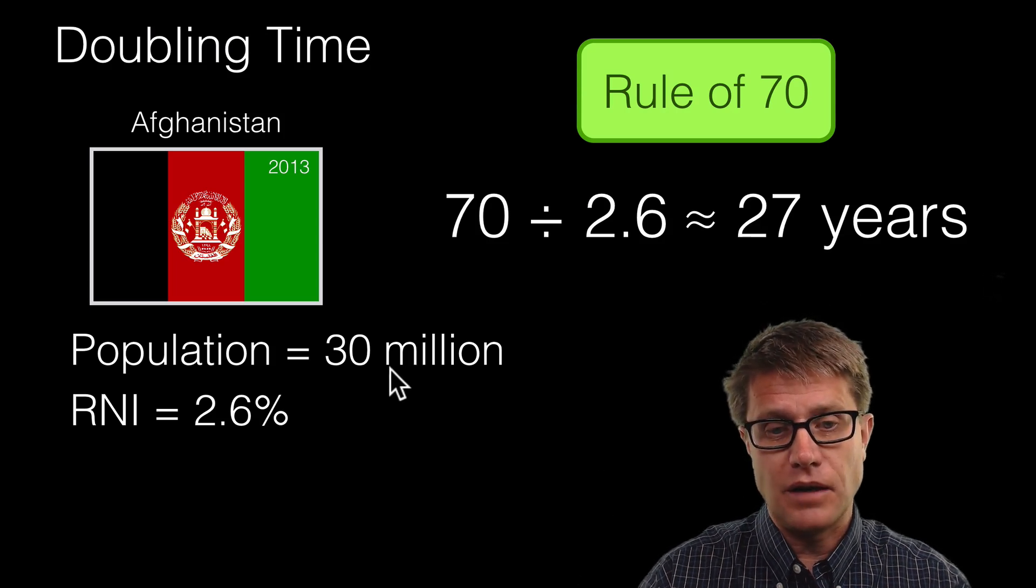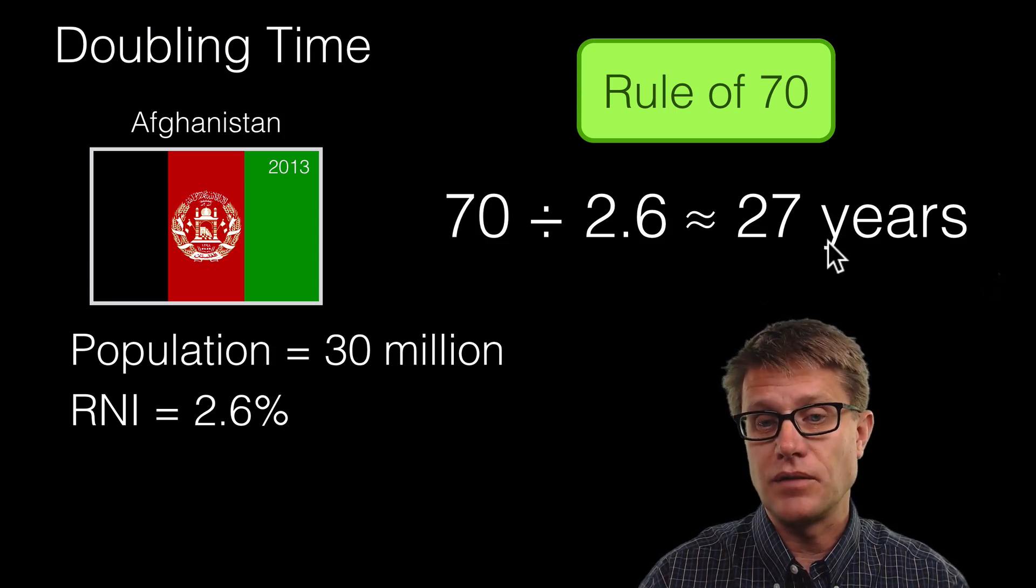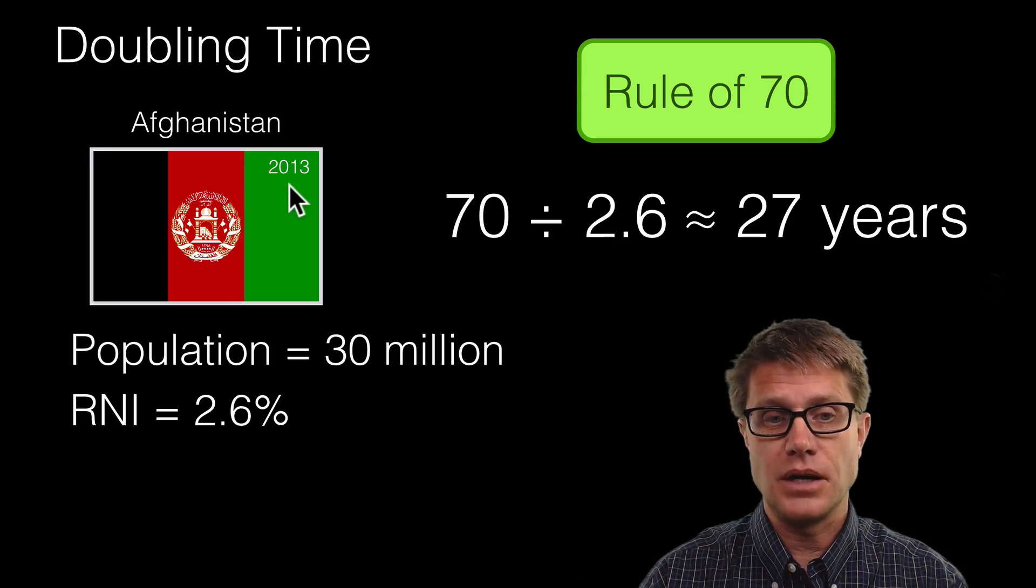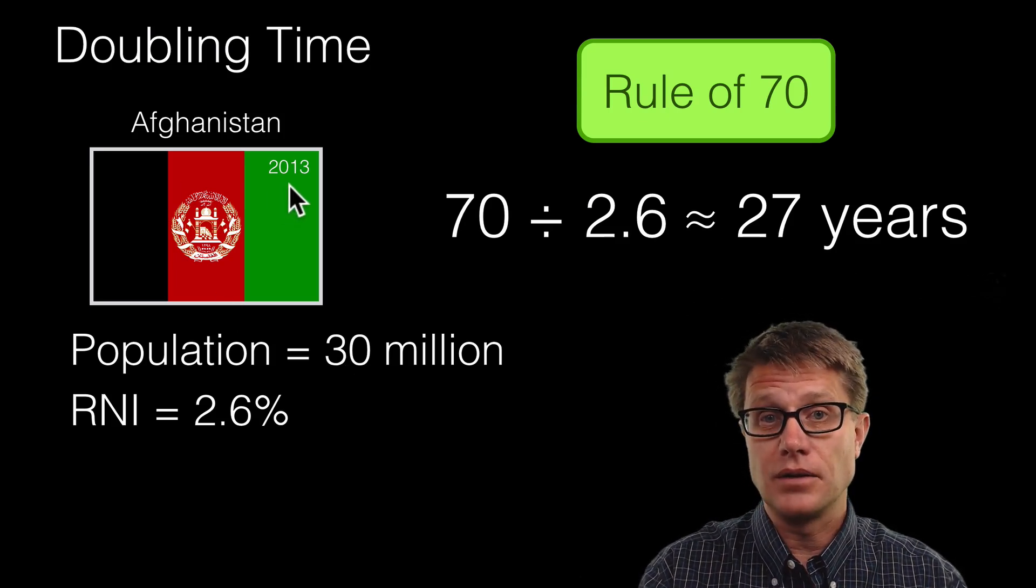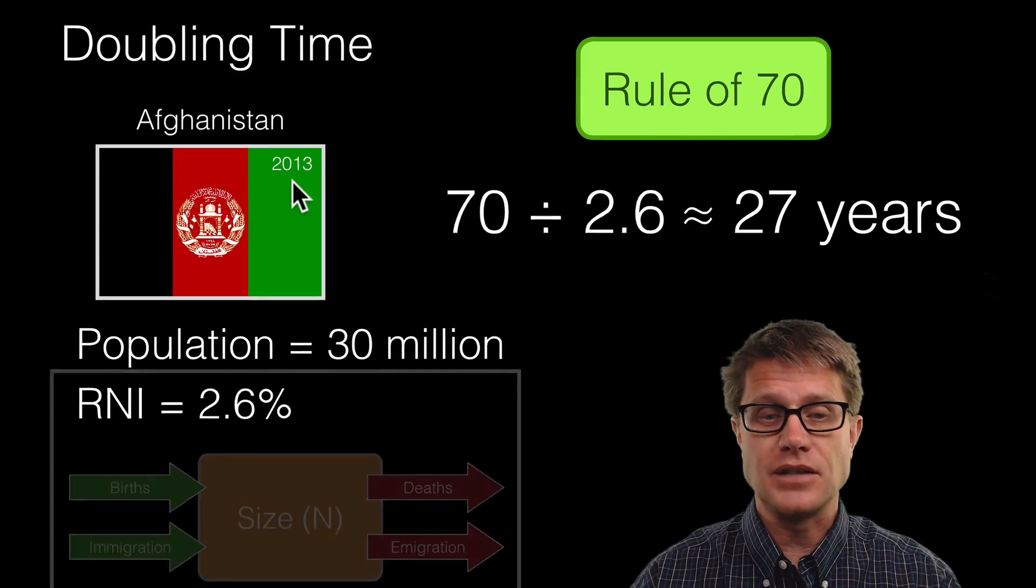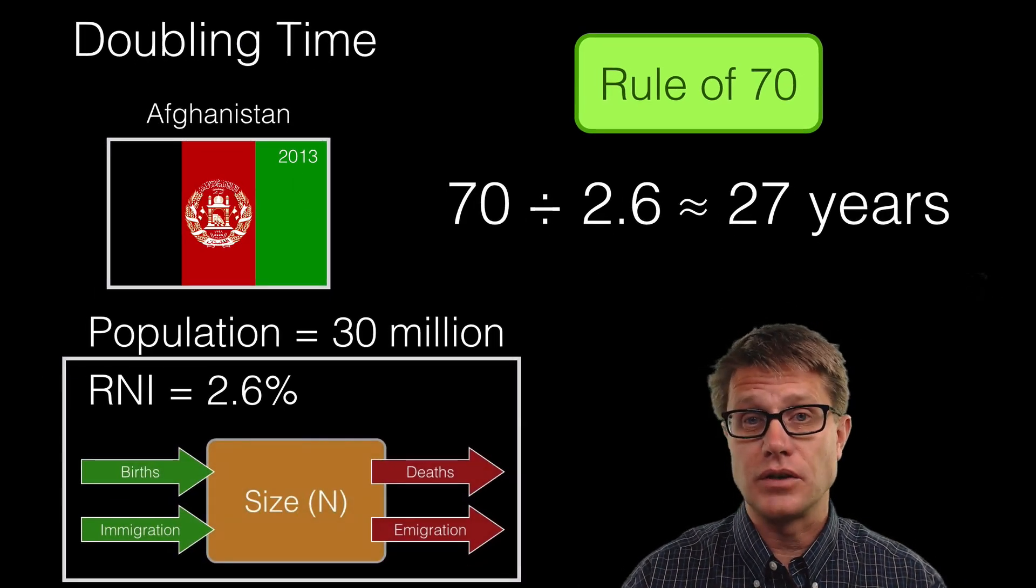So what does that mean? The population in Afghanistan right now is 30 million. So in 27 years it will be 60 million. And so if it is 2013 when these values were given out, it is going to be 2040 when the population goes to 60 million.